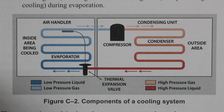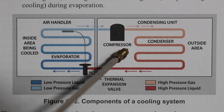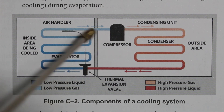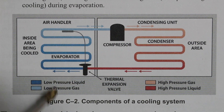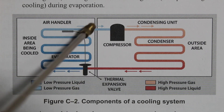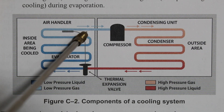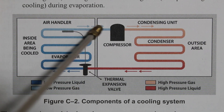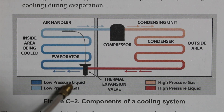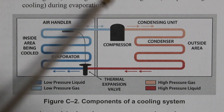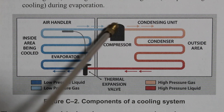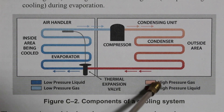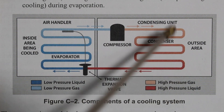Let's begin our lesson with our compressor. Our compressor is also known as a vapor pump. Entering our compressor we have a low pressure gas — specifically a low pressure, low temperature, superheated vapor. A vapor and a gas are the same thing; I just prefer to use the word vapor. So leaving our compressor, if we follow our color code, we have a high pressure gas.